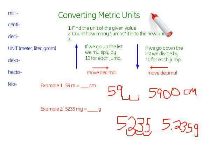So to quickly review, converting metric units is pretty easy. All we have to do is know which direction and how many spots to move the decimal, because everything is multiplying by 10. Find our original unit. Count how many jumps it is. Then if we're going up we're going to multiply. If we're going down we're going to divide.